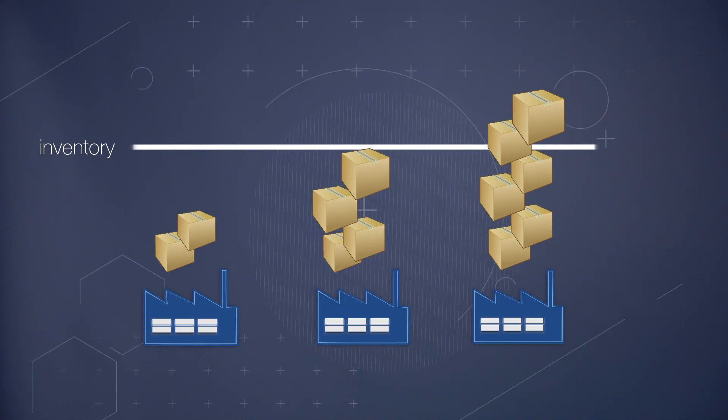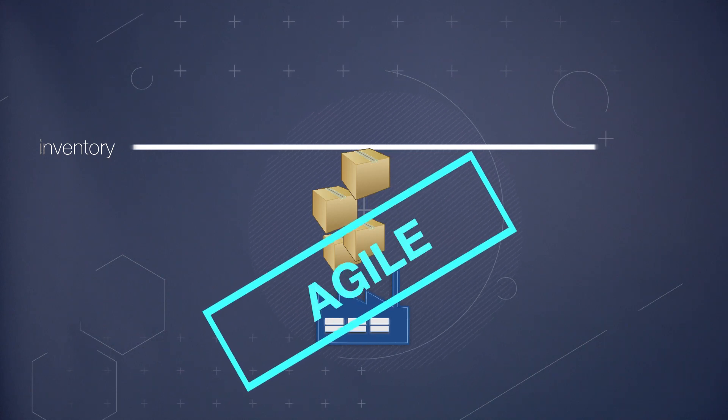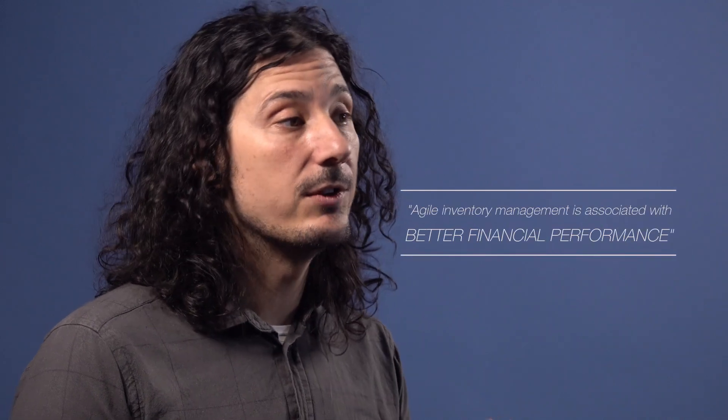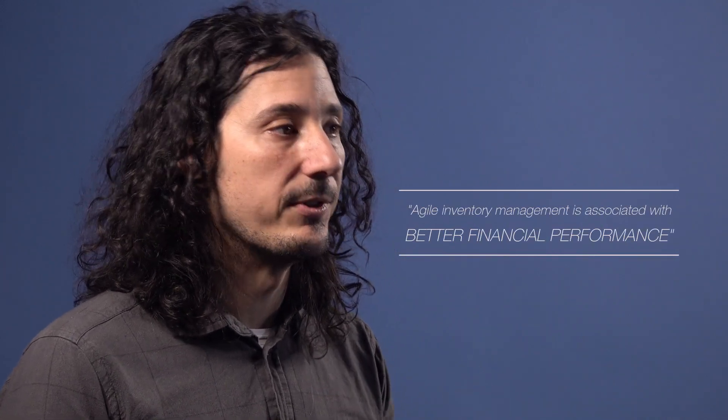The firms that were able to keep inventory stable, we call them agile. What we found is that agile firms did better than those that didn't react and they also did better than those that lowered their inventory too much. In other words, agile inventory management is associated with better financial performance.